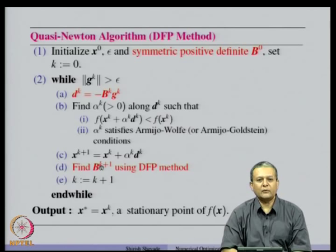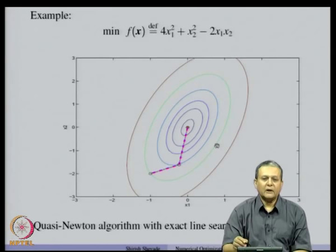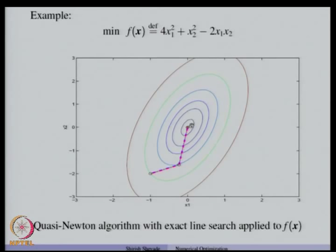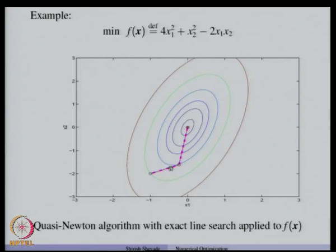Let us take an example. Consider the quadratic function f(x) = 4x₁² + x₂² − 2x₁x₂. The contours of that function are elliptical, with the minimum at the origin. When we apply the quasi-Newton algorithm with DFP method and exact line search, starting from one initial point x_0, we reach x_1 and then x_2 = x*, achieving the solution in exactly 2 steps. Starting from a different initial point we again see that x_0, x_1, and x_2 = x*, so we reach the solution in exactly 2 steps in both cases.